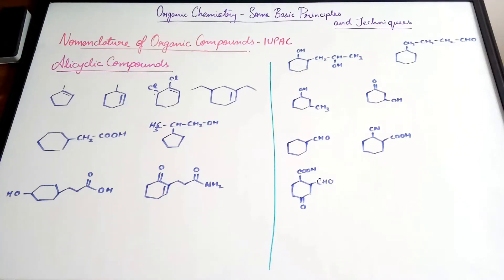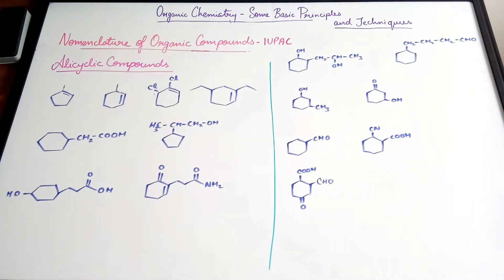In the previous video we discussed the introduction to nomenclature for alicyclic compounds, so if you haven't already checked it out, do check it and then start watching this one. Now, when we have both a double bond and a substituent, the double bond gets the lowest set of locants.